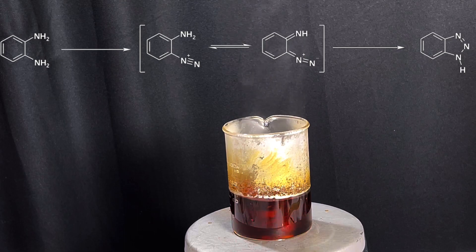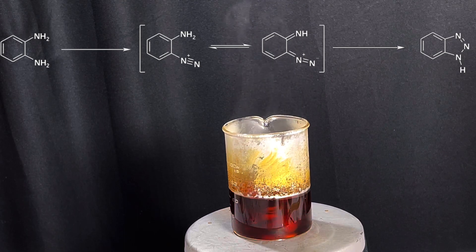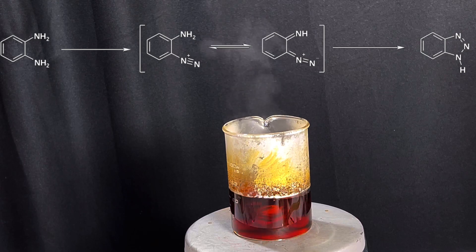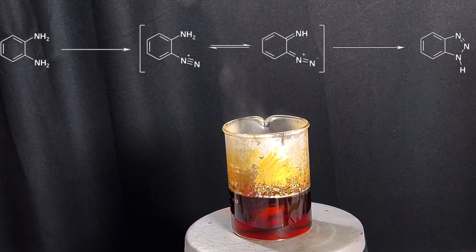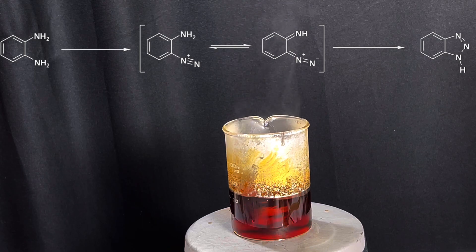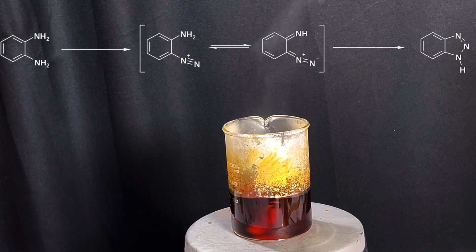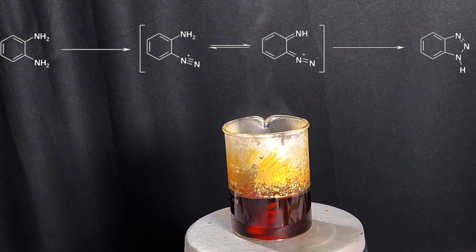The chemical equation for the reaction is shown on screen. Nitrous acid is generated in situ by the reaction of sodium nitrite with acetic acid. This nitrous acid reacts with orthophenylenediamine to form an intermediate monodiazonium salt which immediately cyclizes to form the product.